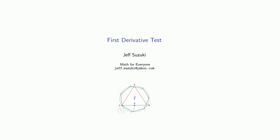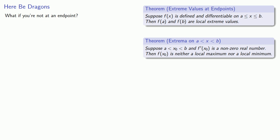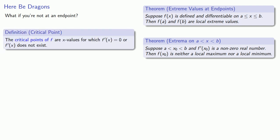To solve an optimization problem, we need to use what's called the first derivative test. Remember that if a function is defined and differentiable over an interval, the endpoints always correspond to local extreme values. But if you're not at an endpoint and the derivative is not equal to zero, then you're neither a local maximum nor a local minimum. So if I want to find a local maximum or minimum, I want the derivative to be zero or to not exist. This leads to our definition of a critical point: the critical points of a function are the x values for which the derivative is zero or does not exist.